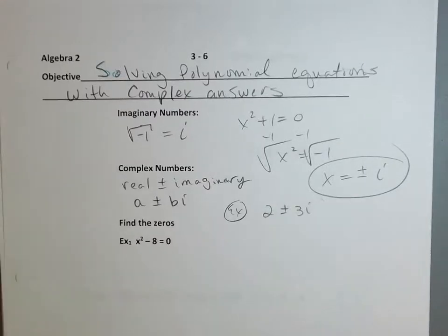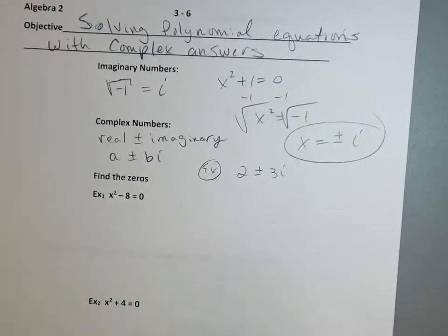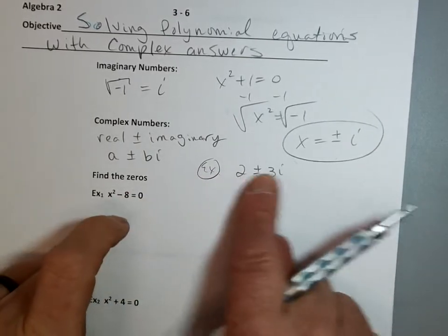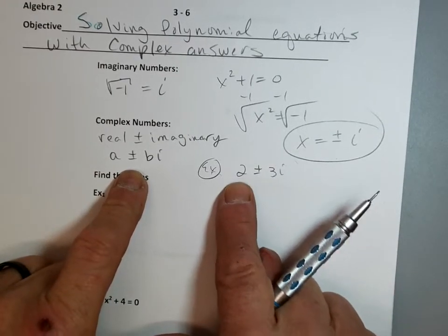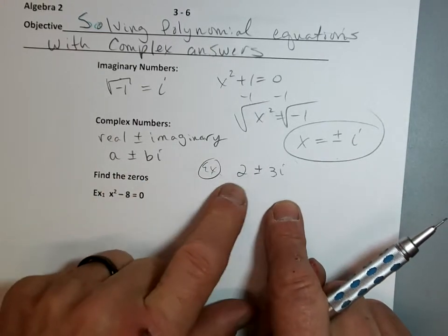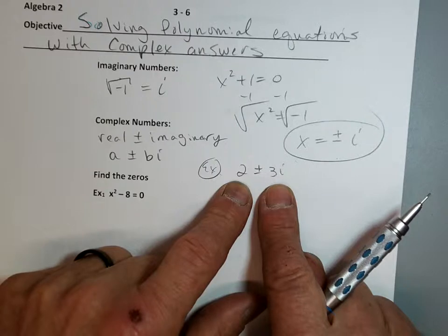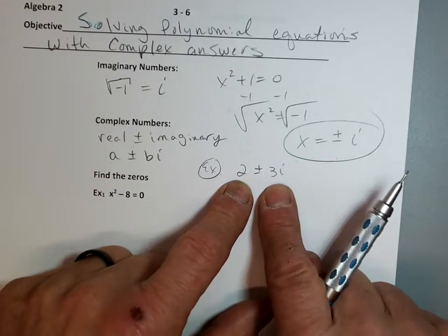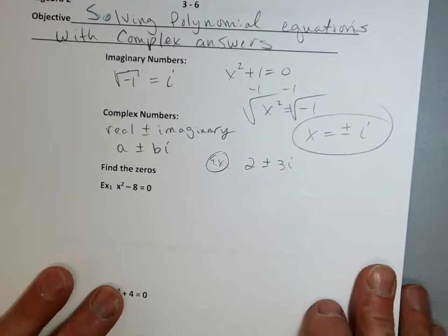Let's look at example 1. A complex number has a real number hanging out with an imaginary — it's like a real person hanging out with an imaginary person. That'd be a complex life, right? Sounds like some relationships. Anyway, example 1: let's solve it. It won't factor, so let's just solve it directly.